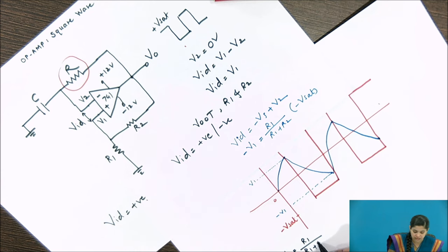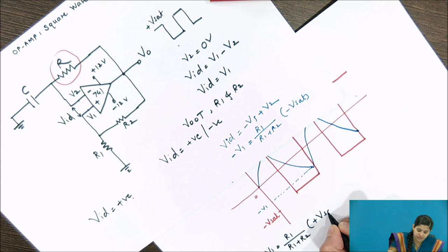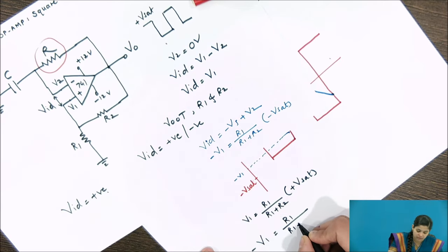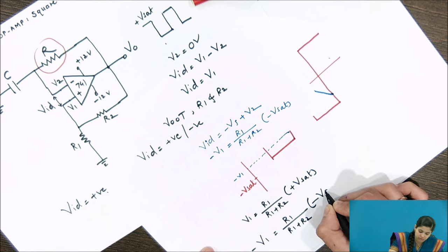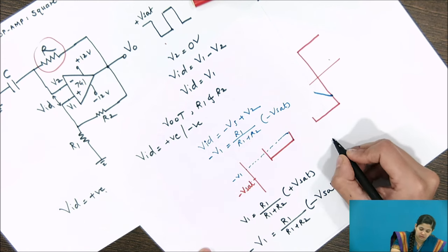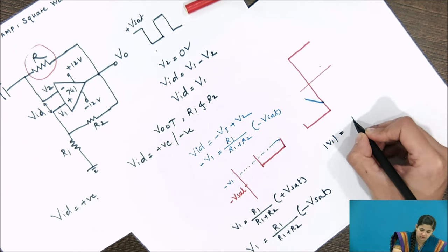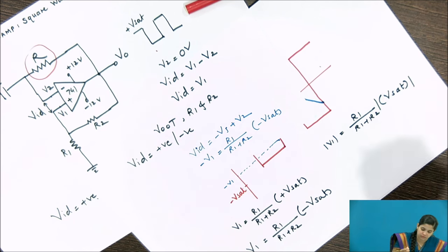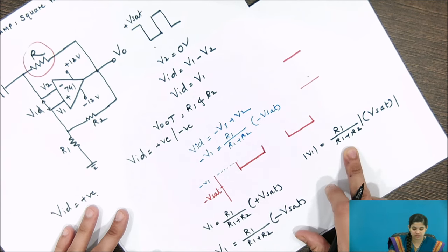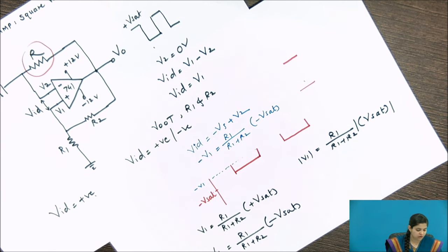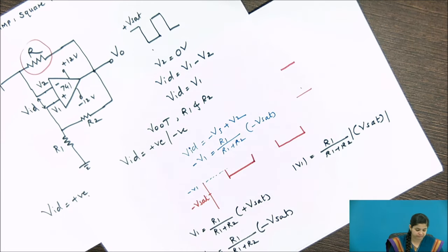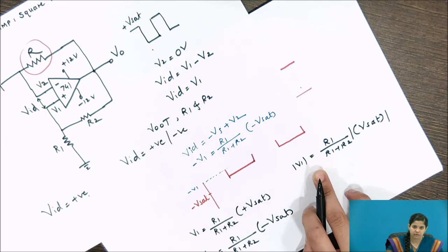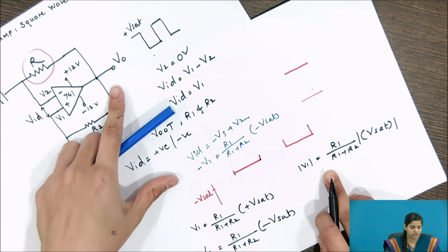The positive V1 value is given as R1/(R1+R2) multiplied by the positive saturation voltage, and the negative V1 value is R1/(R1+R2) multiplied by the negative saturation voltage. Overall, the magnitude of V1 depends on R1 and R2. We get the output switching between positive and negative saturation voltage governed by these V1 thresholds.